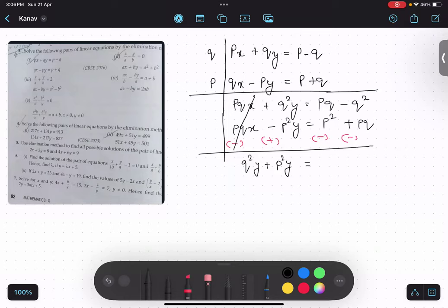Clear? And what is remaining over here? pq minus q square minus p square minus pq. Understood?